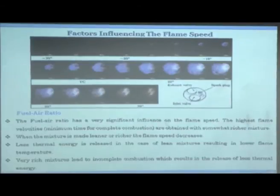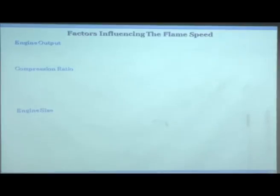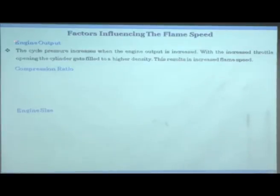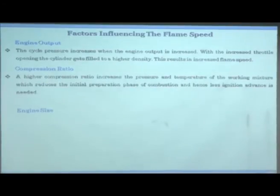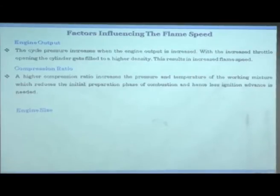With a rich mixture there is not enough oxygen available, so combustion remains incomplete with much formation of carbon monoxide and hydrocarbons. Regarding engine output: the cycle pressure increases when engine output is increased because more fuel is used, so in-cylinder pressure is higher. With increased throttle opening, the cylinder is filled with higher density charge, resulting in increased flame speed. With a higher compression ratio, pressure and temperature will be higher, leading to higher flame velocity.